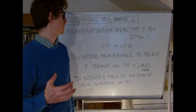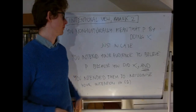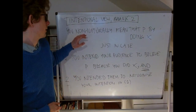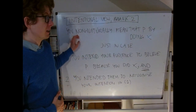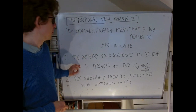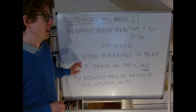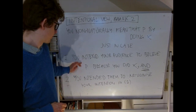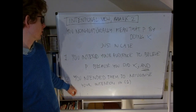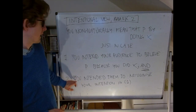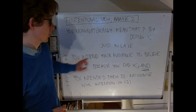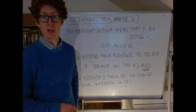Here's the next version of the Intentional View — we might call it the Intentional View Mark 2. It says that you non-naturally mean that P by doing X, just in case: condition 1 is the same — you intend your audience to believe P because you did X. But we add a second condition, which is that you intended your audience to recognize your intention in condition 1. That is, you intended your audience to recognize the fact that you intended your audience to believe P because you did X.